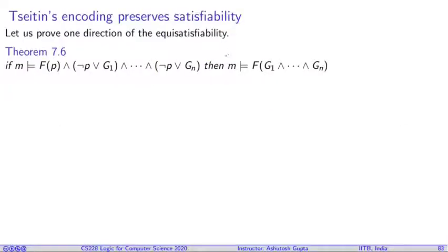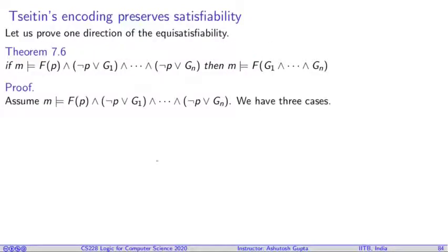So we will do the proof only in one direction. We will say that if my transformed formula is satisfiable by some model M, then the original formula was satisfied by the same model. How do we prove that? Let's suppose M satisfies this formula, your transformed formula, and we will have three cases after that. So let's look at the case one by one. First case, I will say M satisfies P. If that is the case, then you can see that M satisfies P, then M must satisfy all of them.